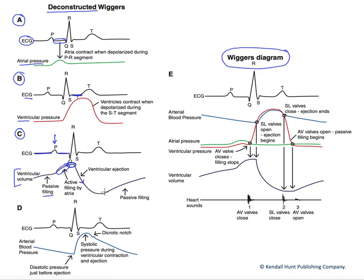We eject our stroke volume, then the ventricle starts to relax. As it starts to relax, eventually that semilunar valve will close and we become isovolumic again. We don't immediately begin to fill yet, because the pressure in the ventricle has to fall below atrial pressure before the AV valve opens. But once it does, we're right back into passive filling, and the ventricles fill up with their diastolic volume to prepare for the next ejection phase.